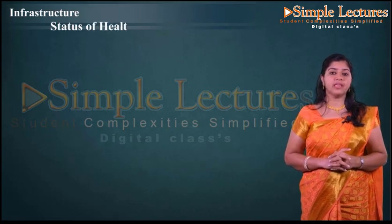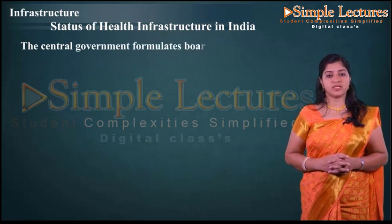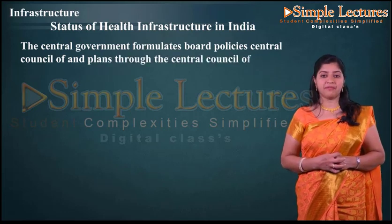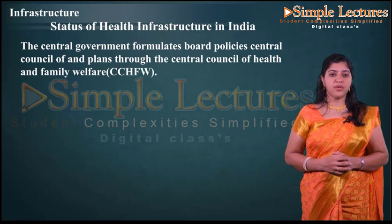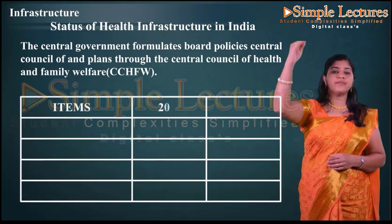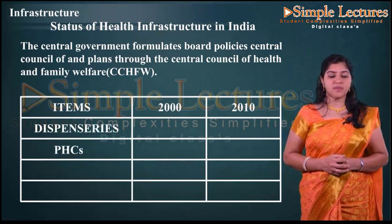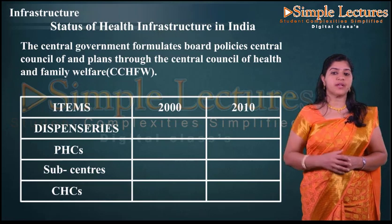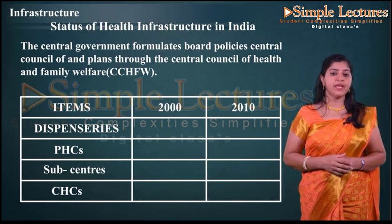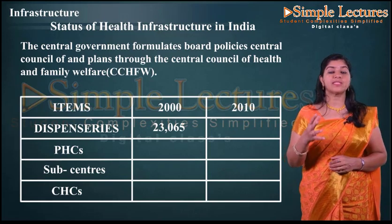Next is the status of health infrastructure in India. The central government formulates broad policies and has established the Central Council of Health and Family Welfare, known as CCHFW, which provides health facilities across different sectors from rural areas to various stages. Under the CCHFW we have dispensaries, primary health centres, sub-centres, and central health centres. In 2000, there were 23,065 dispensaries, which increased to 24,465 by 2010.